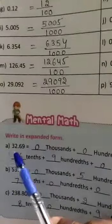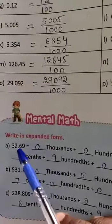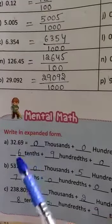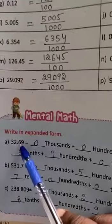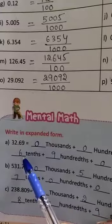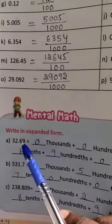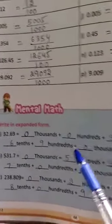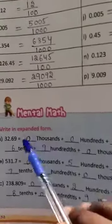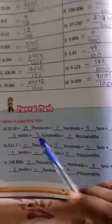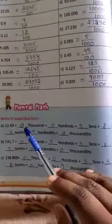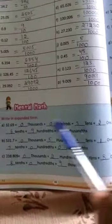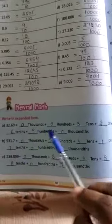After the point: tenths place is 6, hundredths place is 9. Thousandths is 0. So you can write the answer as: 0, 0, 3, 2, 6, 9, 0.